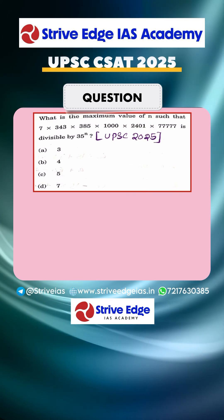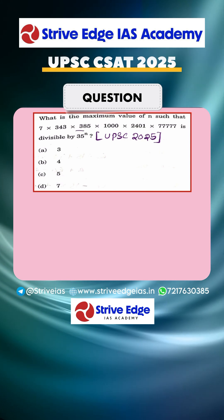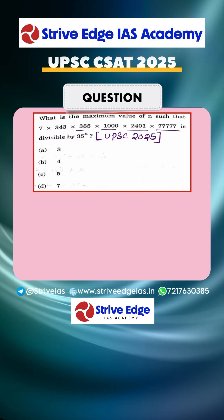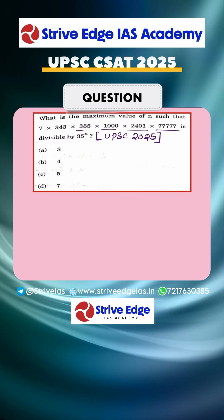The question is: given 7 × 343 × 385 × 1000 × 2401 × 5 × 7 is divisible by 35 to the power n, what is the maximum value of n?